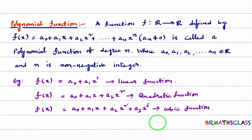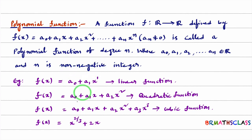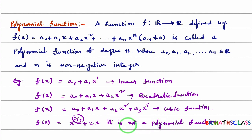Now we will see examples which are not polynomial functions. Consider the function x^(2/3) + 2x. Is it a polynomial function? According to the definition, n must be a non-negative integer. Here the exponent 2/3 is not an integer, so this function is not a polynomial function.